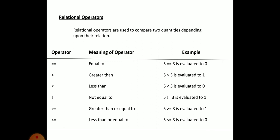Now the next topic is relational operators. Relational operators are used to compare two quantities depending upon their relation. We often need to compare two quantities and make certain decisions based on their relation — for example, to compare the marks or rank between two students, the age of two persons, or the price of two items. For comparing two or more things, we make use of relational operators.